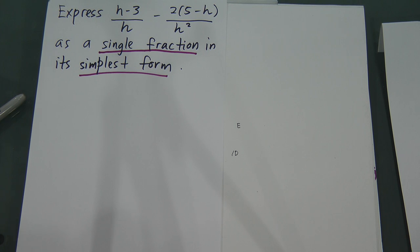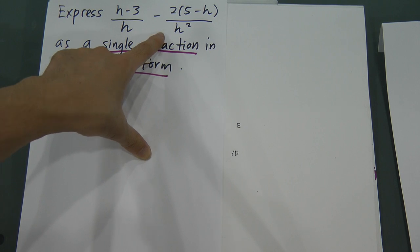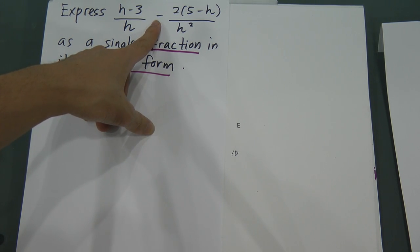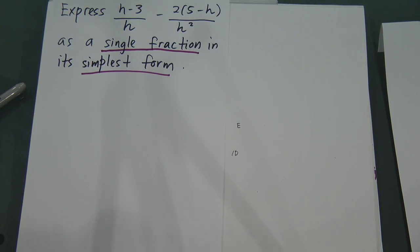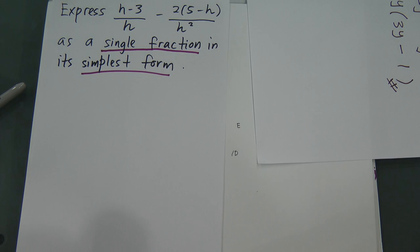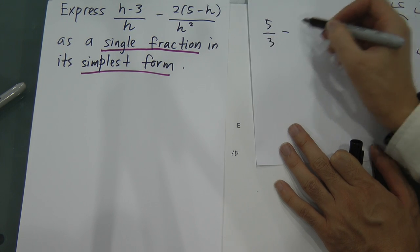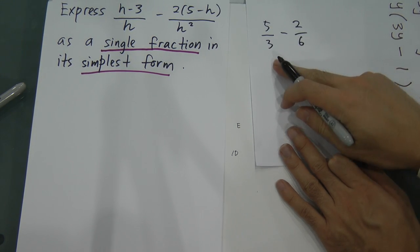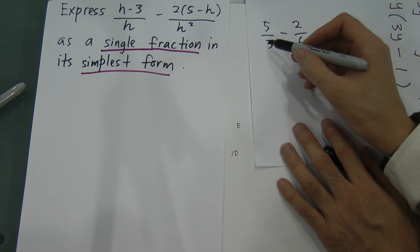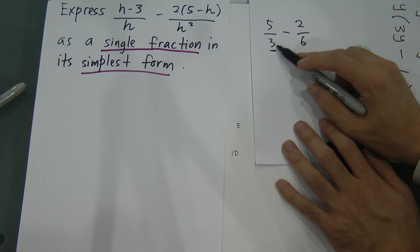When you see a minus sign between fractions, the most important thing is that you have to make sure the denominators are the same before you can subtract. For example, if you have 5 over 3 minus 2 over 6, in order to subtract you have to make sure the denominator 3 becomes 6.